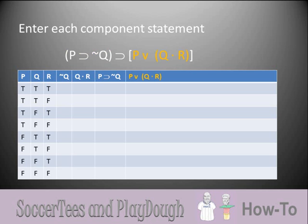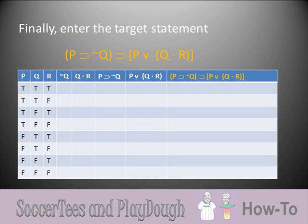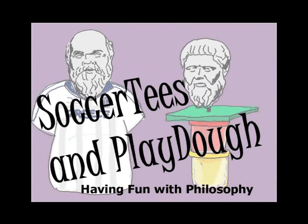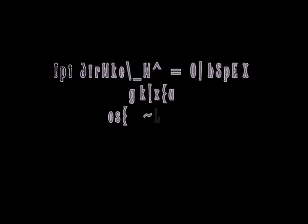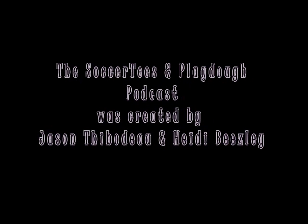If you look, you'll see that these are clearly put in order of complexity, with tilde Q being the simplest and P wedge Q dot R being the most complex. Finally, we're going to add a column for the target statement itself. That concludes Part 2 of setting up a truth table. In the next episode, we'll learn how to complete the table.